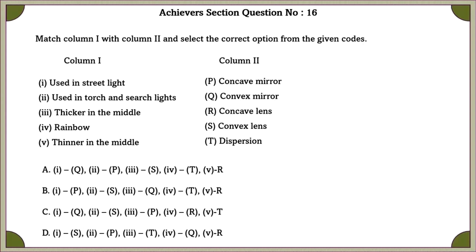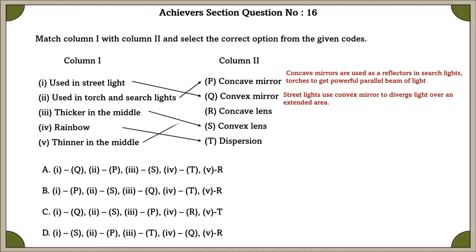Achievers section question number 16. Match column 1 with column 2 and select the correct option from the given codes. Street lights use convex mirrors to diverge light over an extended area. Concave mirrors are used as a reflector in searchlight torches to get powerful parallel beam of light. Thicker in the middle will be convex lens. Rainbow will be dispersion. Thinner in the middle will be concave lens.